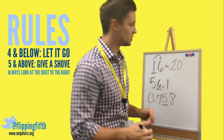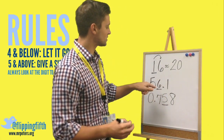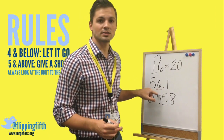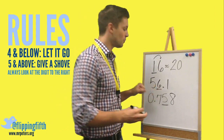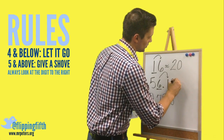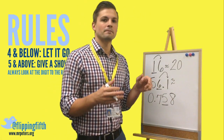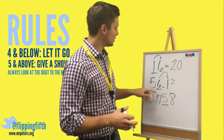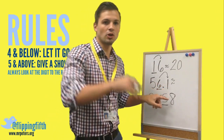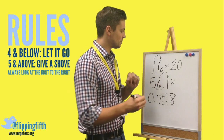Next we have 56 and one tenth. We're rounding to the ones place, so we look directly to the right of the ones digit. We follow the same rule: five and above you give a shove, four and below you let it go. That one tenth is below five, so we keep it the same — it just stays 56.